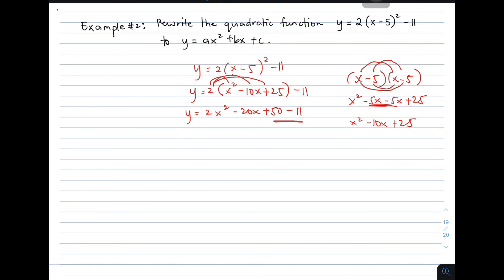Combining these two, that will give you y equals 2x squared minus 20x plus 39. This is the standard form of the given equation in number 2.